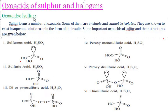Sulfur forms a number of oxoacids. Some of them are unstable and cannot be isolated; they are known to exist only in aqueous solutions or in the form of their salts. The important oxoacids of sulfur and their structures are given in a table.